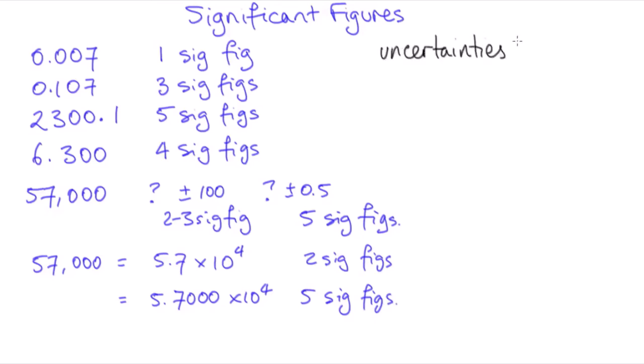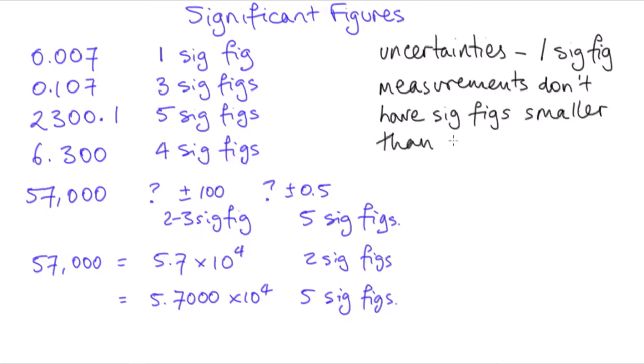One more thing I need to say about significant figures is that errors or uncertainties are only ever given with one significant figure, and the measurement that has this uncertainty should have no digits in decimal places smaller than that uncertainty.